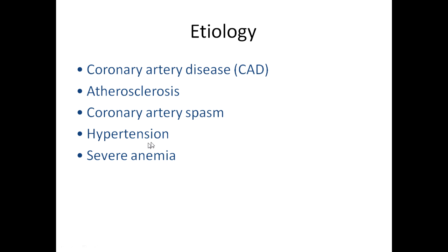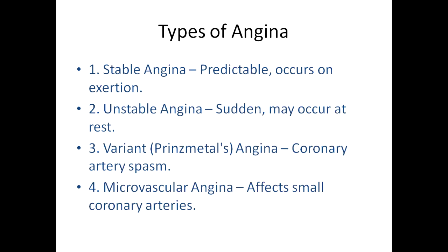Hypertension also causes angina — increased blood pressure creates resistance for the heart to pump blood into the aorta. To overcome this resistance, the heart must contract more, requiring more oxygen, and when demand is not met by supply, angina occurs. Severe anemia is another cause: when there is insufficient blood, the coronary arteries cannot supply the required oxygen to the heart muscle. So the important causes are: coronary artery disease, atherosclerosis, coronary artery spasm, hypertension, and severe anemia.